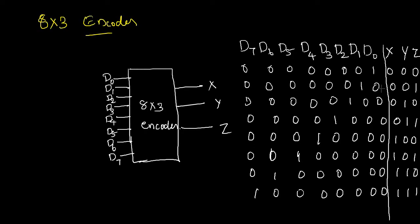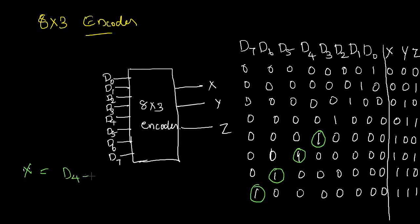Next, we write the algebraic equations for x, y, and z. For x: x will be 1 when d4, d5, d6, or d7 becomes 1. So we can write x = d4 + d5 + d6 + d7.